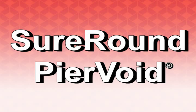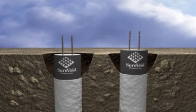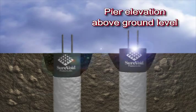Shurvoid Products presents Shurround Pier Void, a pre-manufactured paper product that is positioned around the pier when the top is at ground level or above ground level.